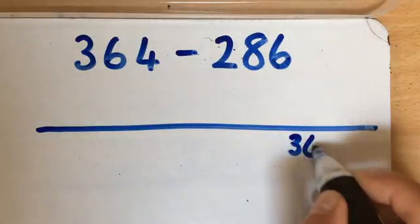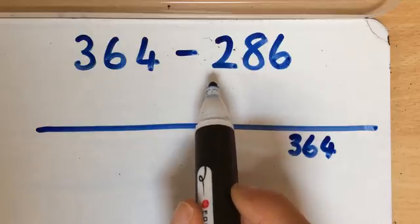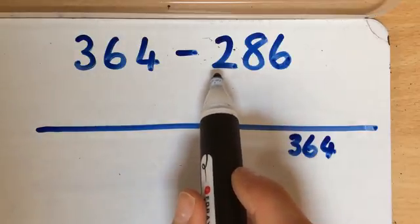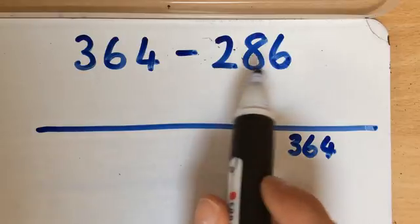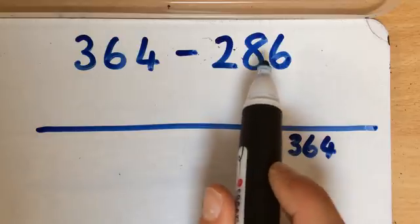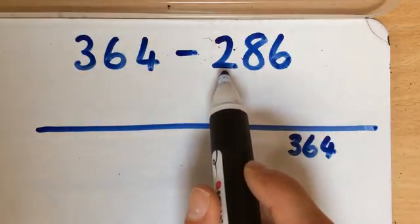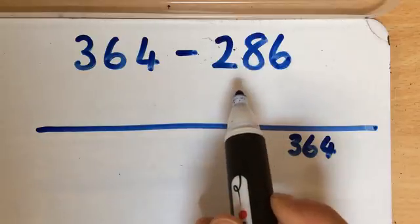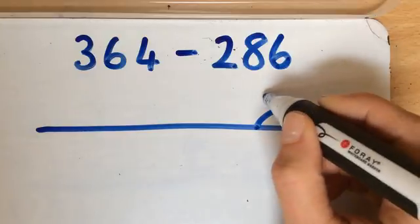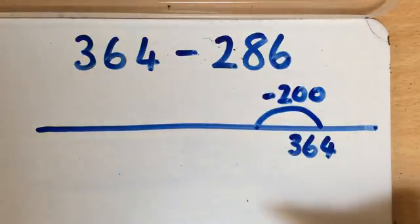So you're starting with the 364 and using your understanding of place value to break up the smaller number into its smaller bits. So you could take away 286, or you could take away the number in any amount of parts that you want, so long as you've taken away the 286 by the end. Recording that using little arched lines and just putting at the top how much you have taken away each time.